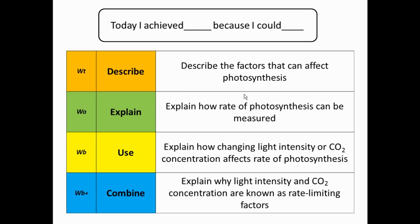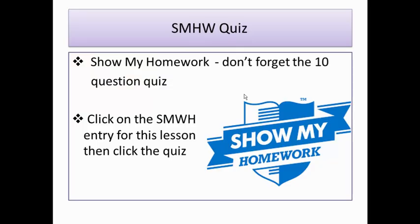Write your sentence for today: 'Today I've achieved...' — remember it's the word, not the colour or the level, and make sure you're including the reason. Once you've completed that, make sure you go on to Show My Homework and do the 10-question quiz. There'll be another revision lesson after this just summarising the topic — there won't be a Show My Homework quiz for that, so this is the last quiz for this topic. Make sure you get that done so we know you've watched the lesson. You've all done brilliant work this topic — revision lesson next, and I'm sure you'll all do brilliantly.